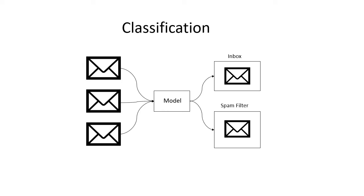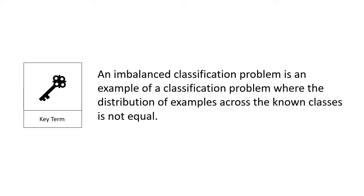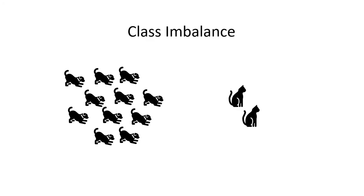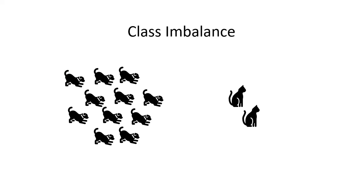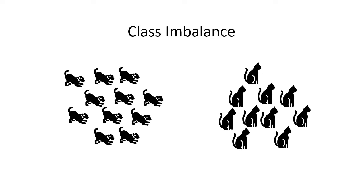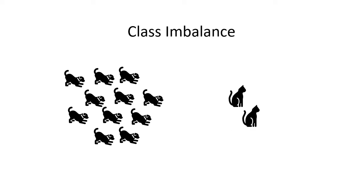Classification predictive modeling involves predicting a class label for a given observation. An imbalanced classification problem is an example of a classification problem where the distribution of examples across the known classes is not equal. The distribution can vary from a slight bias to a severe imbalance where there is one example in the minority class for hundreds, thousands, or millions of examples in the majority class. Imbalanced classification poses a challenge because most machine learning algorithms were designed around the assumption of an equal number of examples for each class, resulting in poor predictive performance specifically for the minority class — which is typically of the most importance.